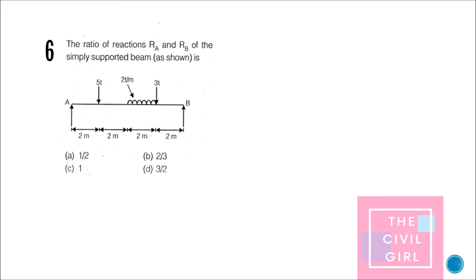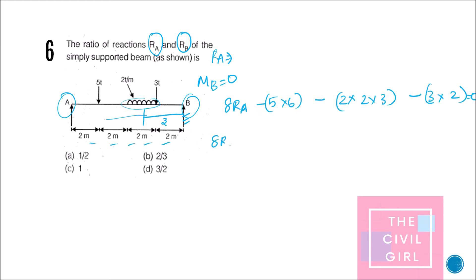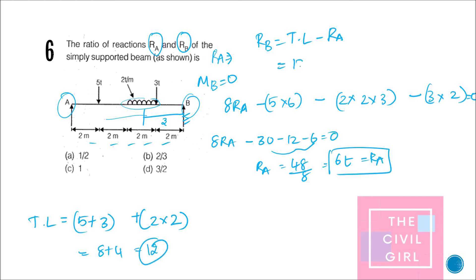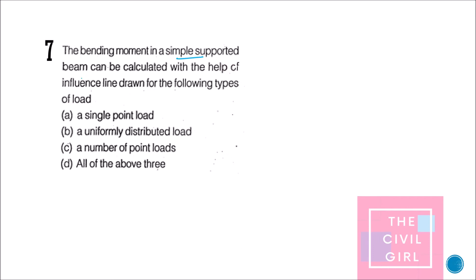Next question: the ratio of reactions A and B of a simply supported beam is what? Finding Ra: taking moments gives Ra = 48/8 = 6. Total load = 12, so Rb = 12 − 6 = 6. Therefore Ra/Rb = 6/6 = 1, and the ratio is 1:1. The answer is option C.